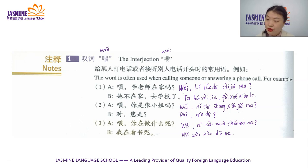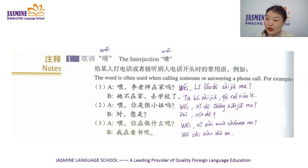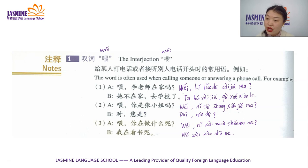Number 2: 喂, 你是张小姐吗? Hello, are you Miss Zhang? 对, yes. 您是 — 您 is a polite way to say 'you'. So 您是 is asking 'who are you?', right?